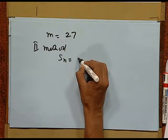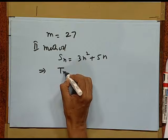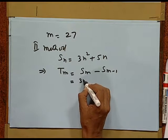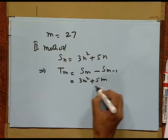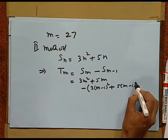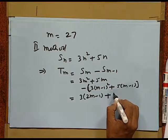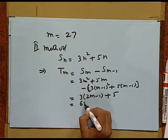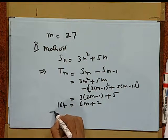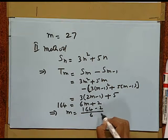We have sn is equal to 3n square plus 5n. This means that tm is sm minus s m minus 1. That gives 3m square plus 5m minus 3 times m minus 1 square plus 5 times m minus 1. This gives 3 times 2m minus 1 plus 5. That is, 6m plus 2. But tm was 164. This implies m is equal to 164 minus 2 upon 6.